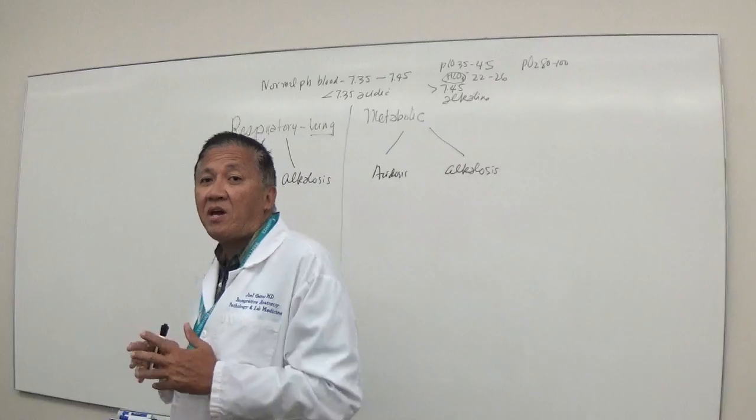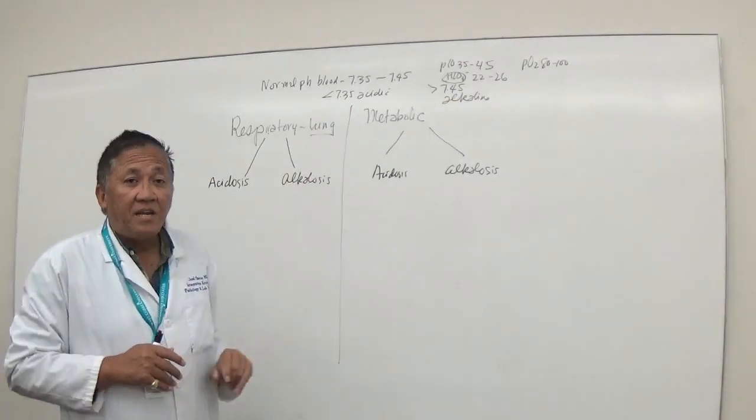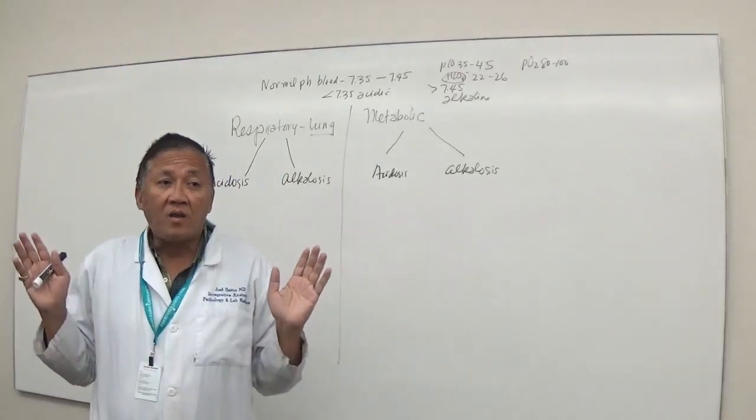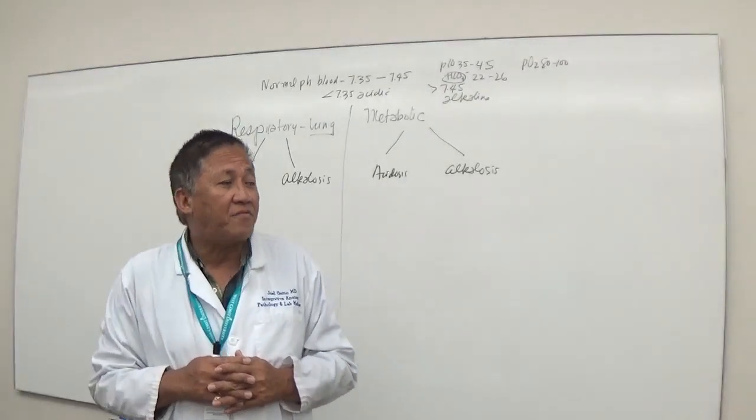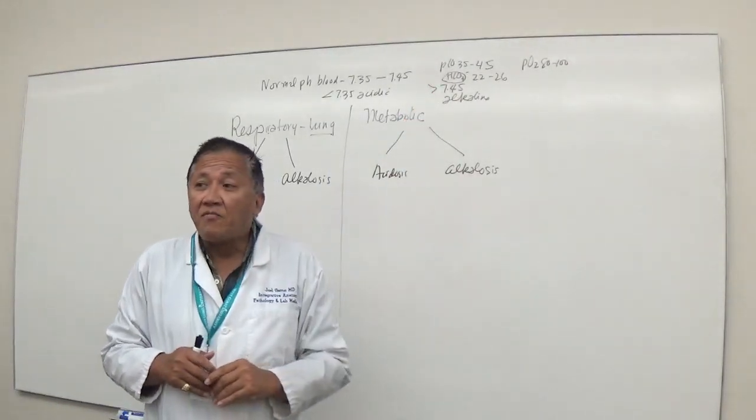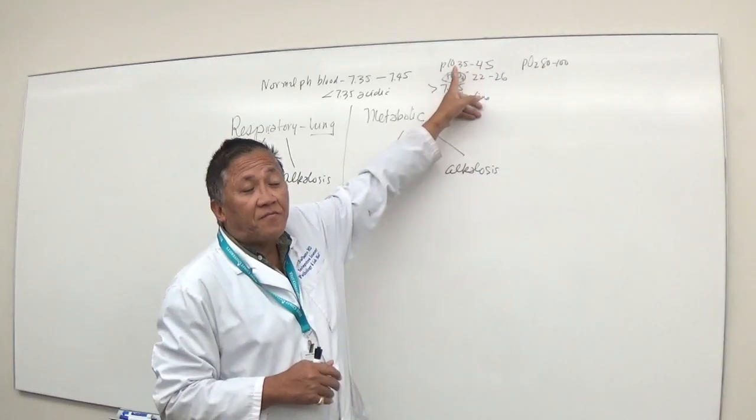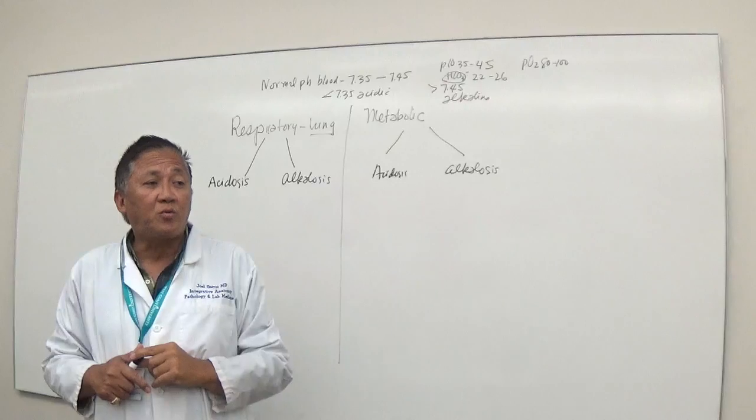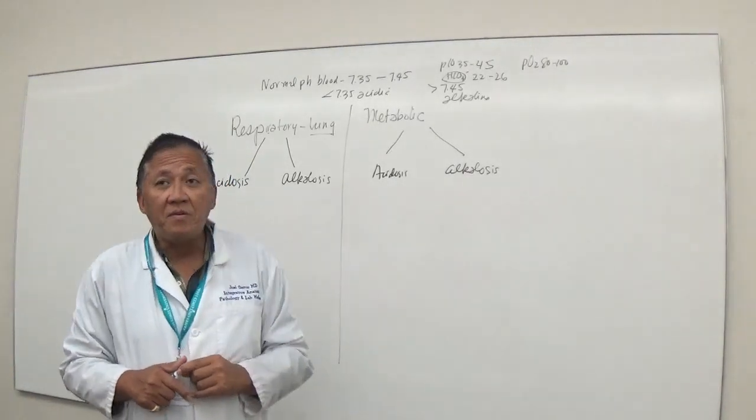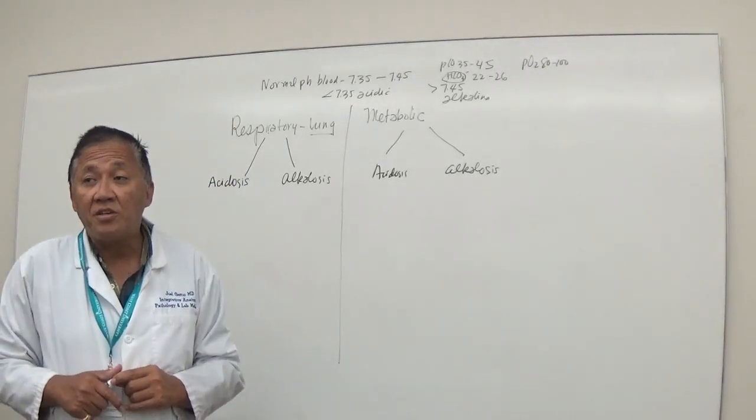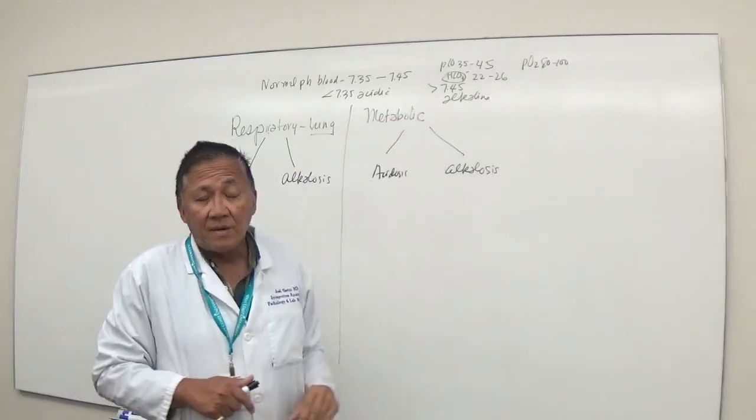Why is it important? It will come up in your nursing board exam. The important thing is to know the normal values: normal pH is 7.35 to 7.45 of the blood. Anything below 7.35 is acidic, anything above 7.45 is alkaline. Normal PCO2 values range from 35 to 45. Bicarbonate values range from 22 to 26. PO2 or partial pressure of oxygen ranges from 80 to 100.